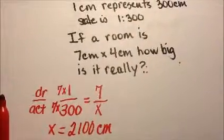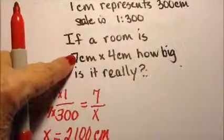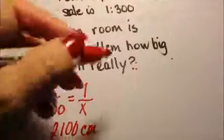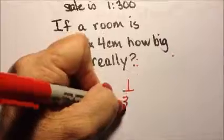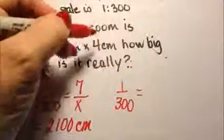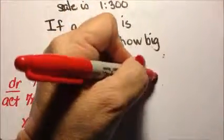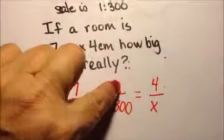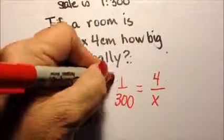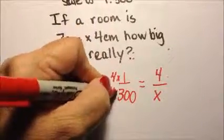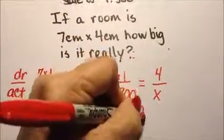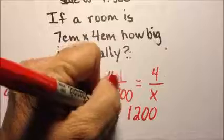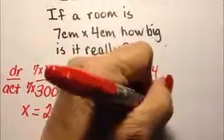Alright, with the 4 centimeters, I have 1 to 300 and the drawing is 4 centimeters and I need to know how much that is. So 1 times 4 is 4 and 4 times 300 is 1,200. So that x here is 1,200 centimeters.